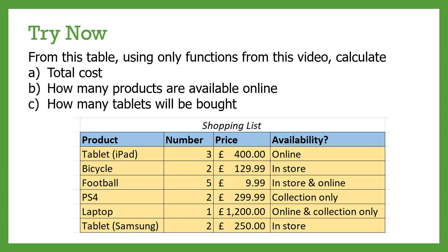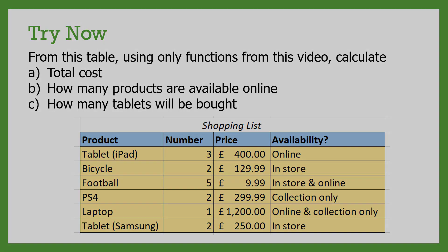Now try a relatively simple exercise. There's a table — a link to the file is in the description — and using just the functions from this video (COUNTIF, SUMIF, SUMPRODUCT), try to work out: the total cost without using another column, how many products are available online only, and how many tablets will be bought in total. A solution file is also in the description.